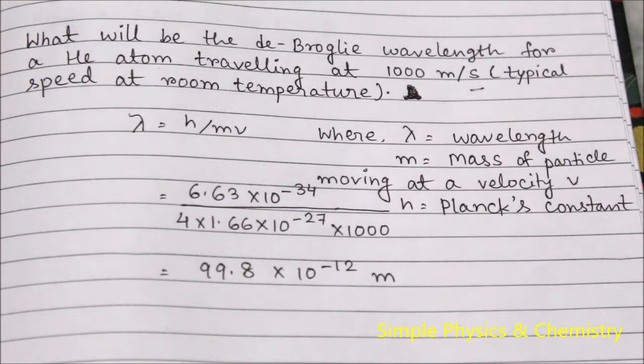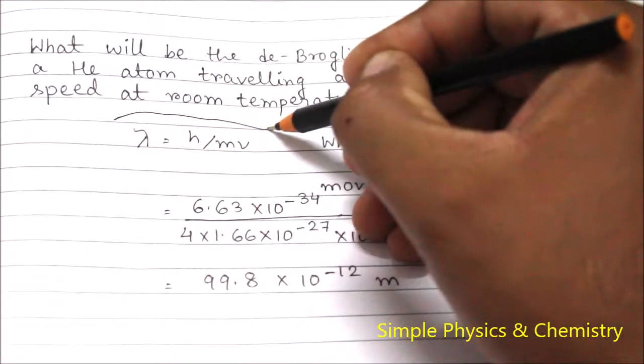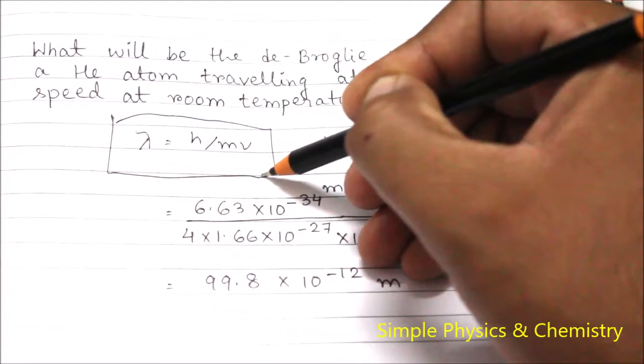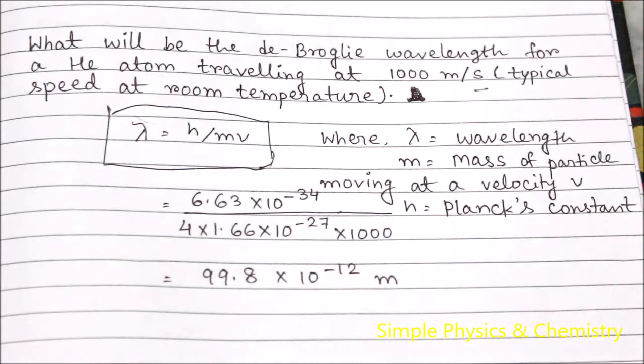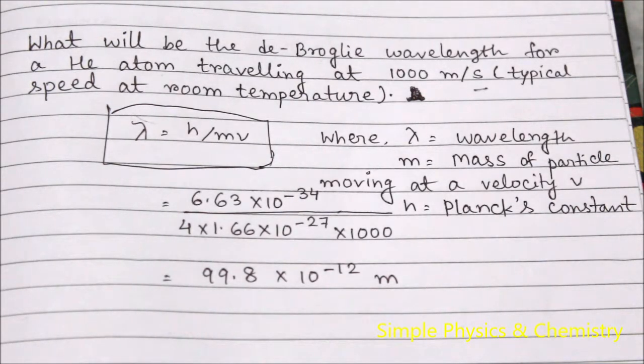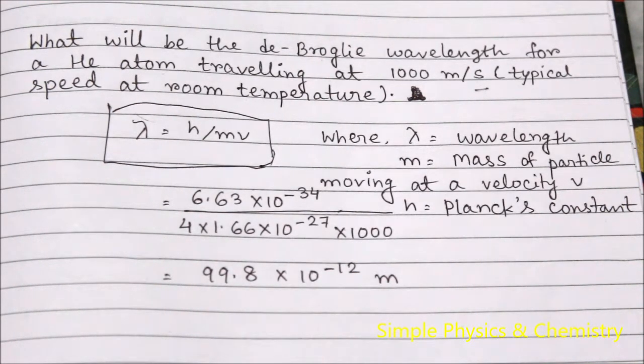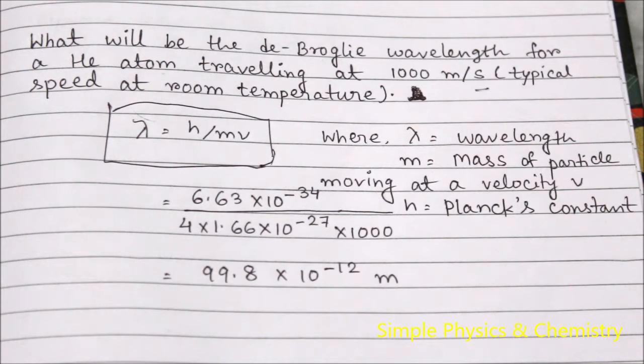To solve this problem, we will use the De Broglie equation: lambda equals h by mv, where lambda is the De Broglie wavelength of the moving particle, h is Planck's constant, m is the mass of the particle, and v is its linear velocity.